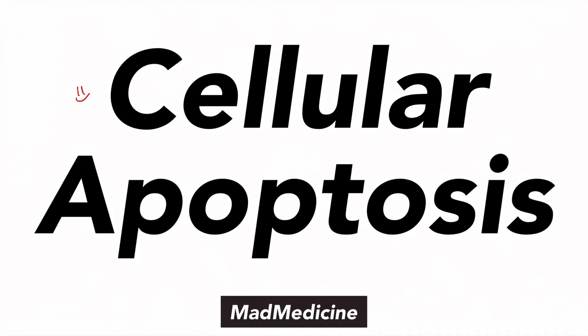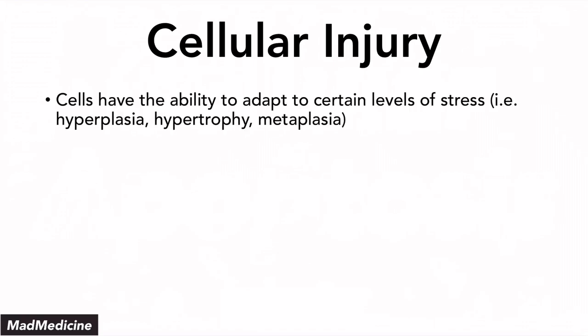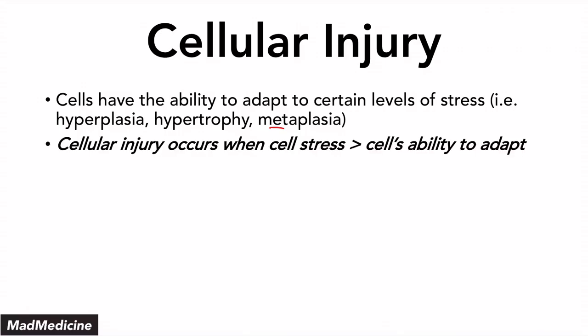Let's discuss cellular apoptosis and start off by getting an overview of cell injury. Usually, our cells have the ability to adapt to certain stresses based off of how the cell changes via hyperplasia, hypertrophy, or metaplasia. Now, when the level of stress actually exceeds our cells' ability to adapt, you are going to have cellular injury occur.